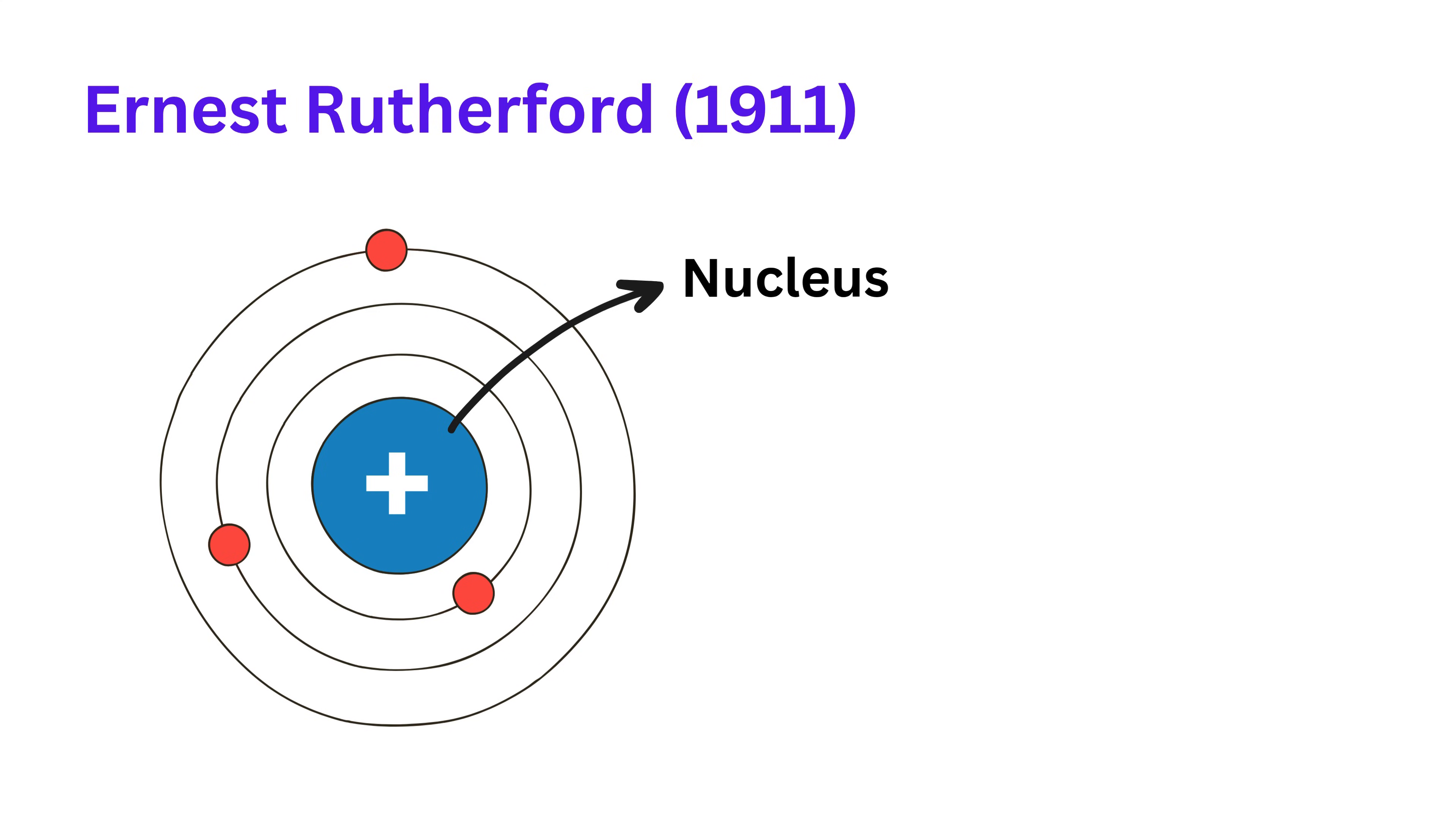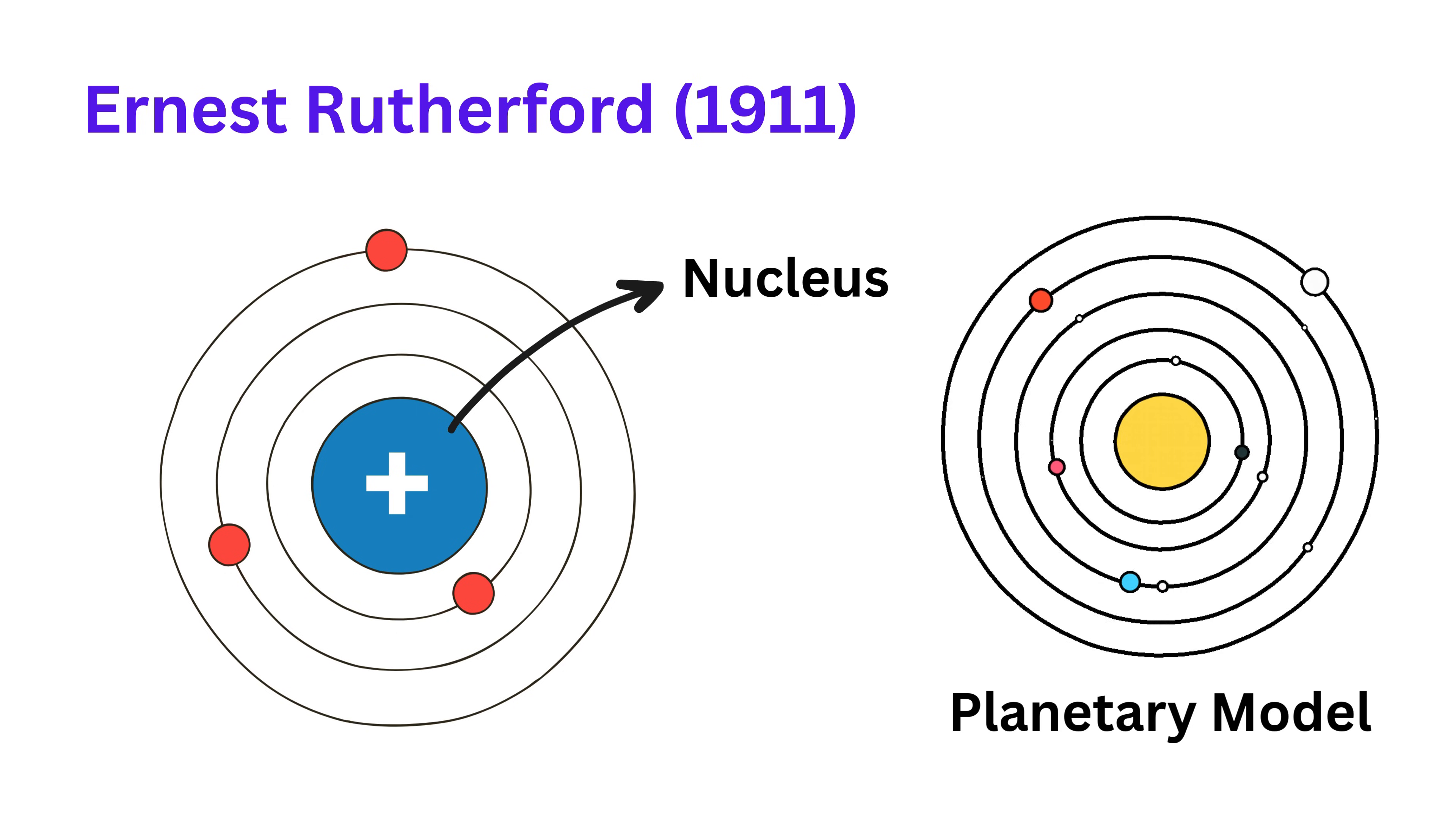He proposed a new model, called the planetary model, where the electrons move around the nucleus like planets around the sun. This model made a lot more sense, but it still had a problem.